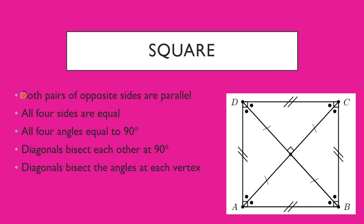Finally, the square: both pairs of opposite sides are parallel, all four sides are equal, and all four angles are equal to 90 degrees — exactly like the rectangle. The diagonals bisect each other at 90 degrees. The diagonals also bisect the angles at each vertex — the same as with the rhombus — making each bisected angle 45 degrees, because 90 divided by 2 is 45 and 45.